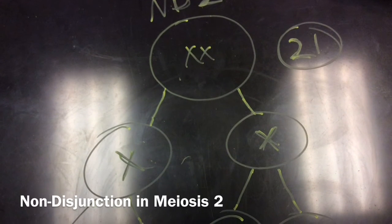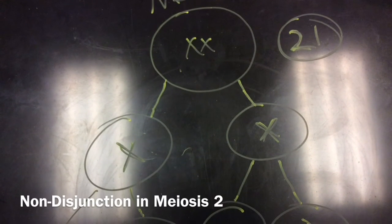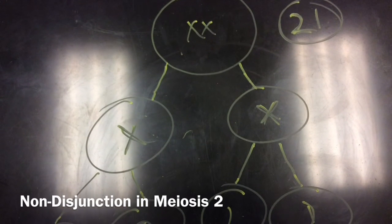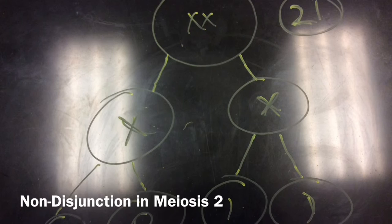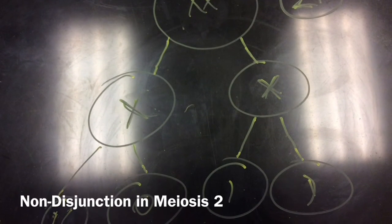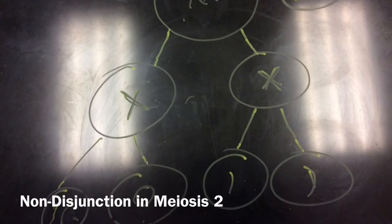A non-disjunction in meiosis II occurs when sister chromatids fail to separate properly during anaphase. One gamete receives two of the same sort of chromatid and the other gamete receives no copy. Some gametes are unaffected.